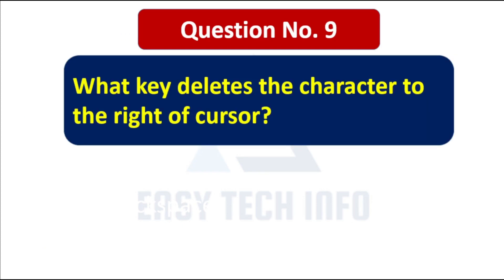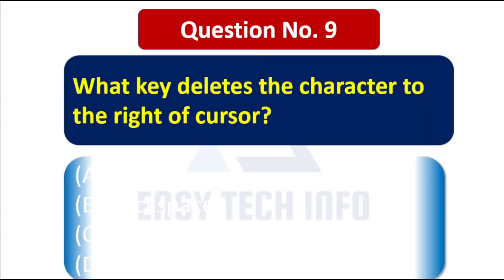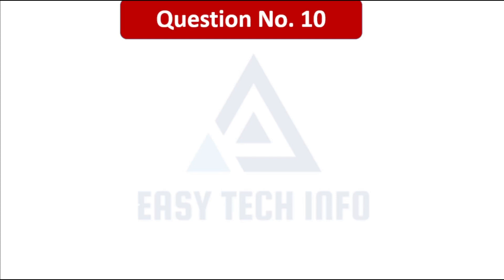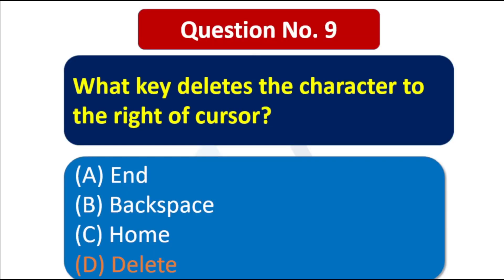Question number 9: What key deletes the character to the right of the cursor? The correct answer is option D, Delete. When we press the Delete key, the character to the right side of the cursor is deleted.